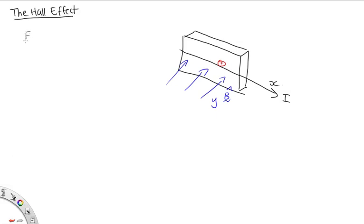We know that F is equal to QV cross B. And as it's flowing in the current, it will have some drift velocity in the direction of the current. So you can see it's going to feel a magnetic force. In this case, using the right-hand rule, that magnetic force will be upwards. So as it feels a magnetic force, it will respond to that force and move up to the top.